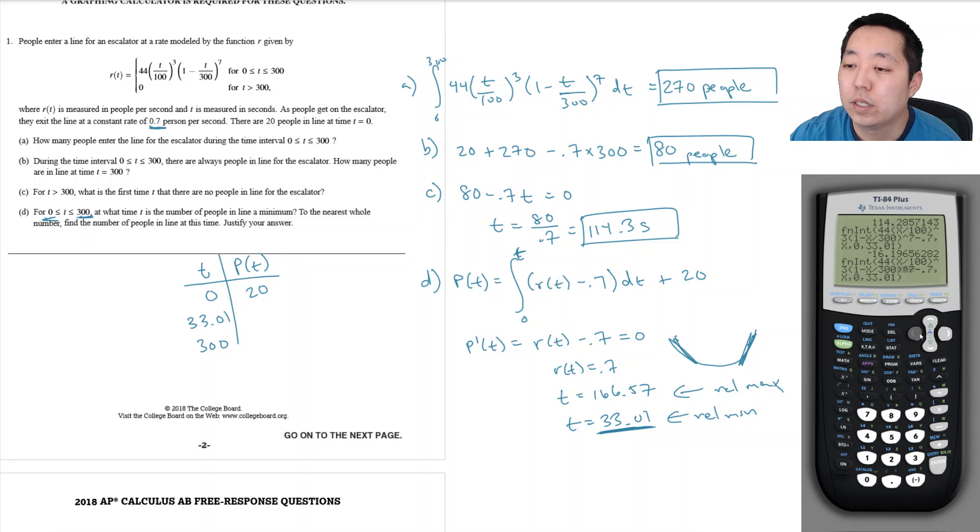Why is this happening, how do I have negative people? Oh I gotta add 20 to this, that's my problem. So 3.8 people here and at 300 we decided there were 80 people.